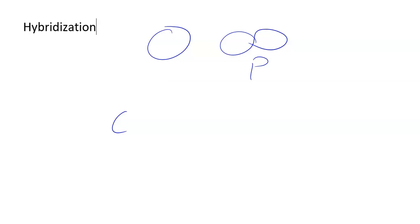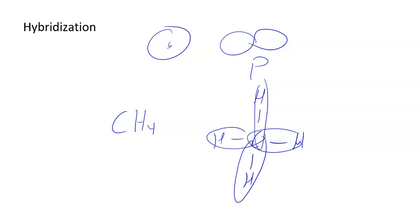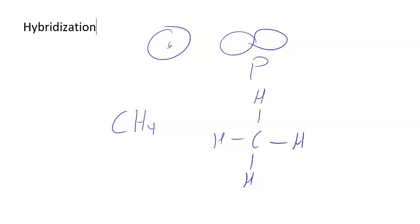Most things we deal with are not single atoms. If you had something like methane, where carbon is bonded to four hydrogens, you can't have one spherical s orbital and three double-lobed p orbitals. You would guess that all four bonds are going to be equal — and they are. They're going to be a hybrid. A hybrid is when you mix two things and end up with something completely different but related to each parent.